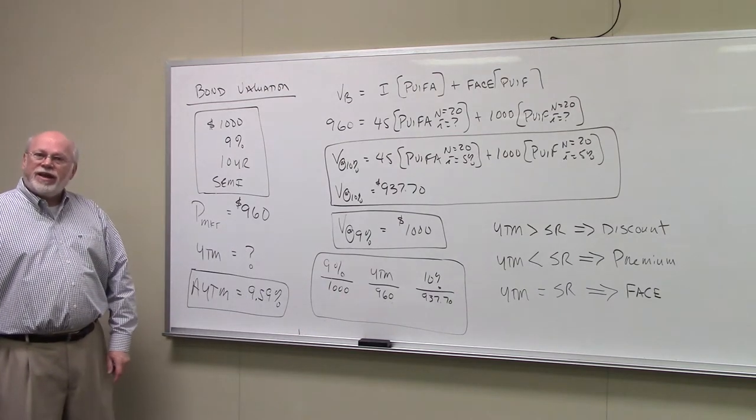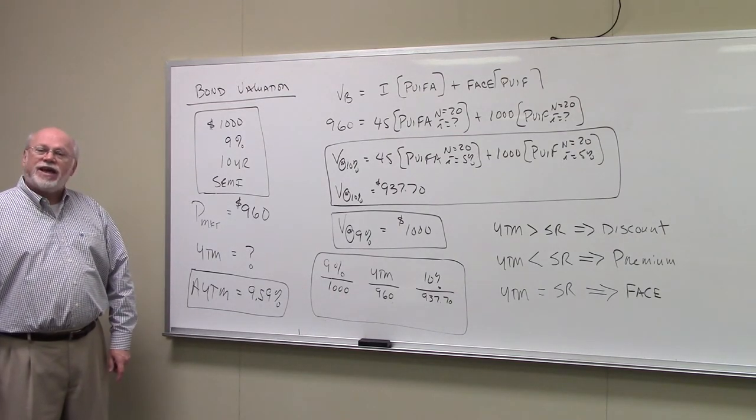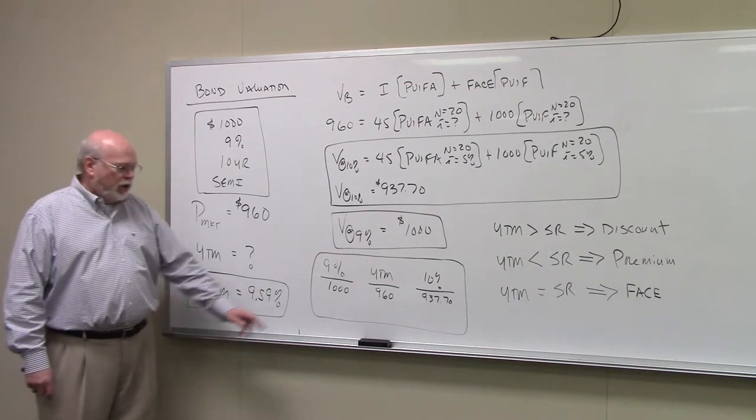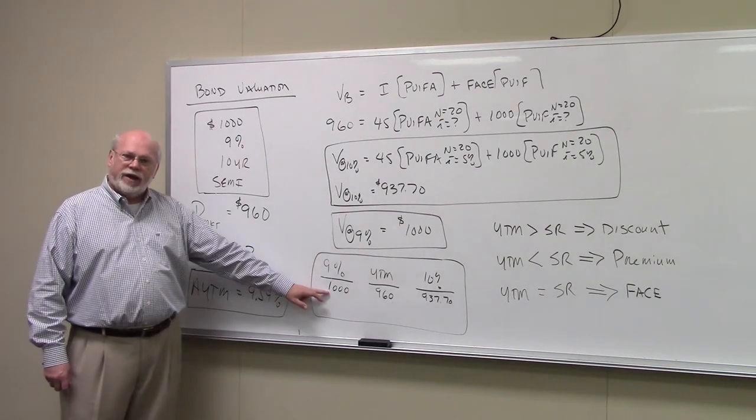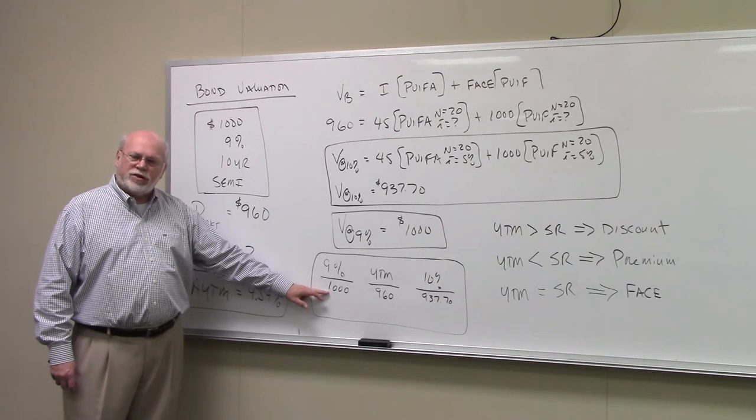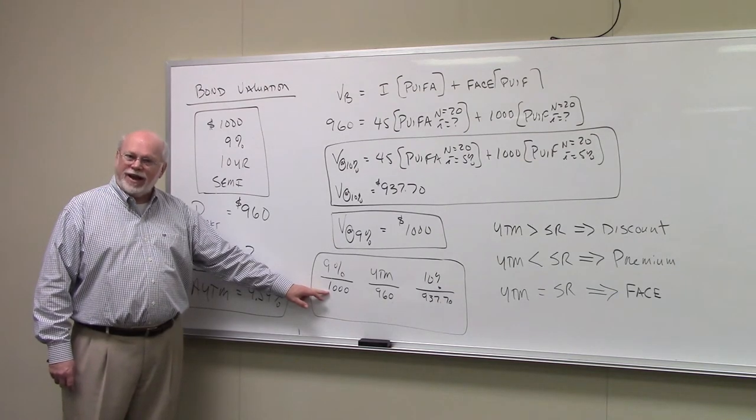Is the yield on this bond exactly 9%? No, because the price of the bond in the market is not $1,000. So, the yield on the bond can't be 9%.